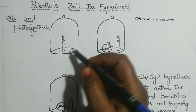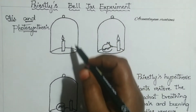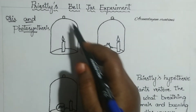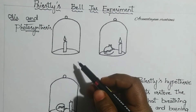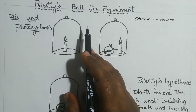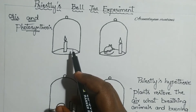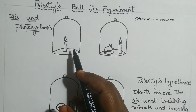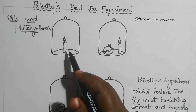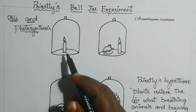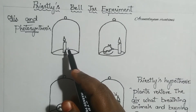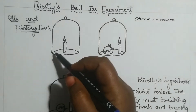Priestley's Bell Jar experiment: we have to take a glass jar which is in the shape of a bell — a bell-shaped glass jar. What he observed in his first experiment was that the candle put off — the candle was extinguished — inside this closed glass jar.